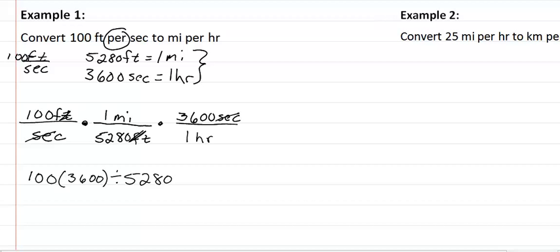Let's throw that in the calculator. I get that we have 68.18 repeating. So we will consider this 68.18 miles per hour.